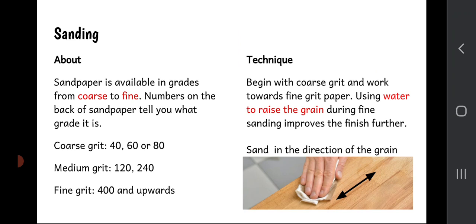Sanding is first. Sandpaper is available in different grades - you get coarse, rough sandpaper and fine sandpaper, and the numbers on the back tell you what grade it is. The coarse stuff is low numbered: 40, 60, 80, something like that, right up to the fine grit which is 400 and above. The number on the back indicates its smoothness. The higher the number, the smoother the sandpaper.